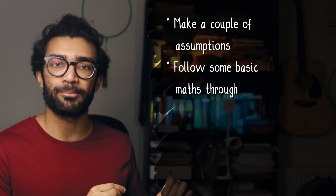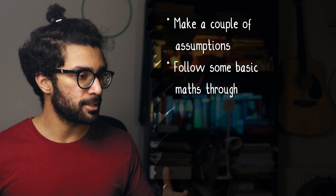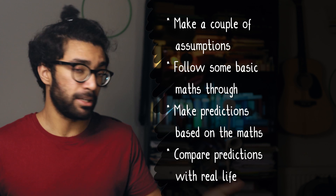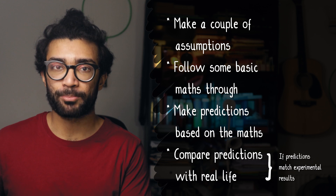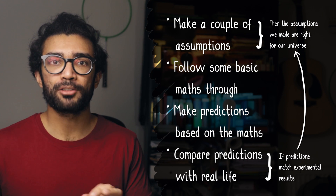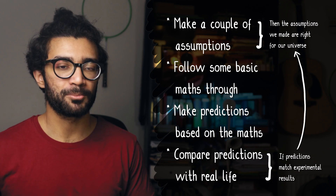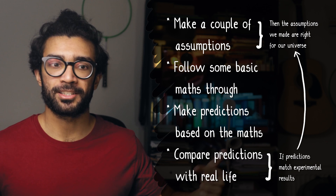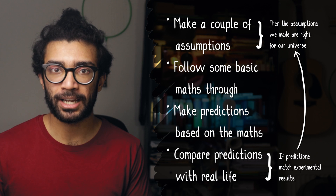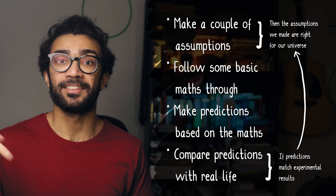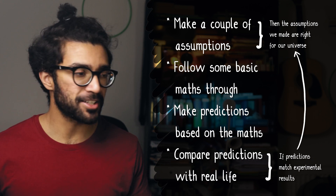This is where things get interesting. We're going to make a couple of assumptions and follow some basic mathematics through to see where it leads us. When we make these assumptions, we'll be able to make predictions based on the mathematics and test them in real life. If the predictions match what we find in experiment — what our universe does — then the assumptions we made are the right ones for our particular universe, at least until somebody else comes along and proves them wrong. In many ways this is how theoretical physics interacts with experimental physics.